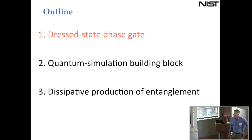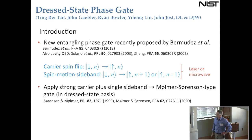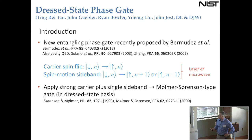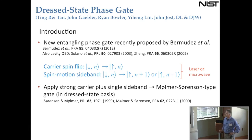The first of three topics is a new type of phase gate. In this particular implementation, it's a proposal by Bermudez and colleagues for an entangling phase gate. It involves applying a carrier spin flip — which flips a spin without changing the motion — as well as a single spin-motion sideband. You can choose to use something that adds or subtracts motion.